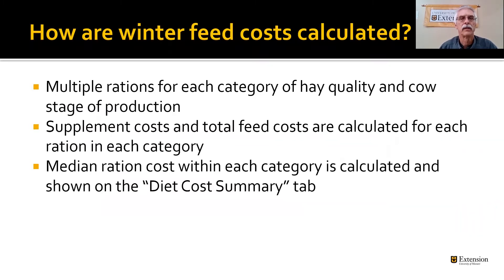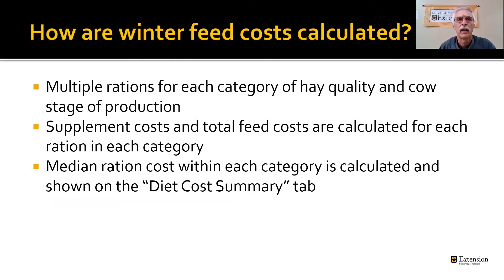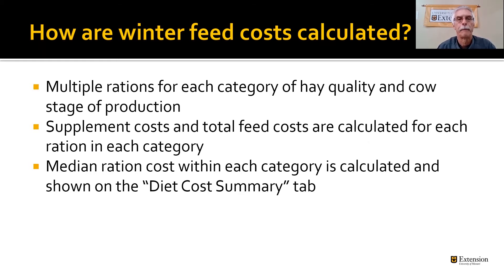As we had these multiple rations for each category of hay quality and animal stage of production, the supplement costs and total feed costs were calculated for each ration in each category, and then the median cost within each category is calculated — and that is what's shown on the diet cost summary.